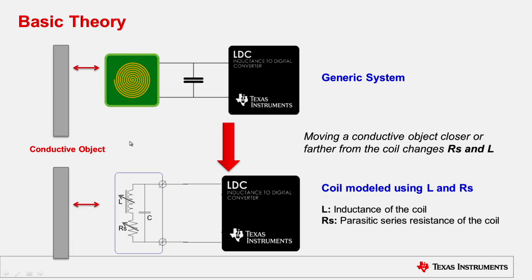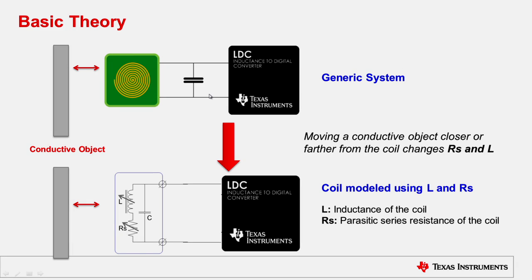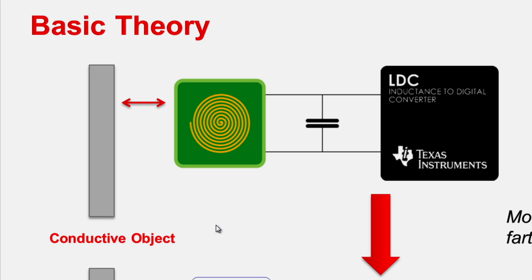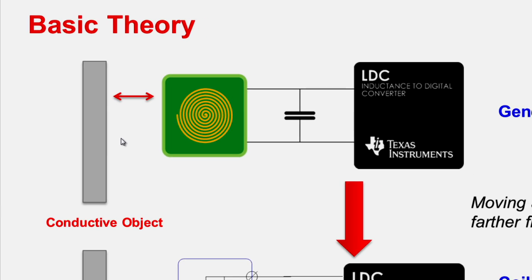To give you an idea of what the system looks like, we have the coil connected to a capacitor which interfaces with the LDC. This is essentially an LC tank that is created here. As a conductive object moves further or closer to the coil, it changes the characteristics of the coil.